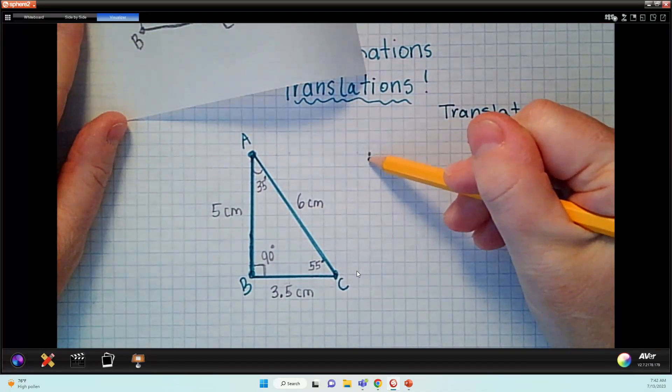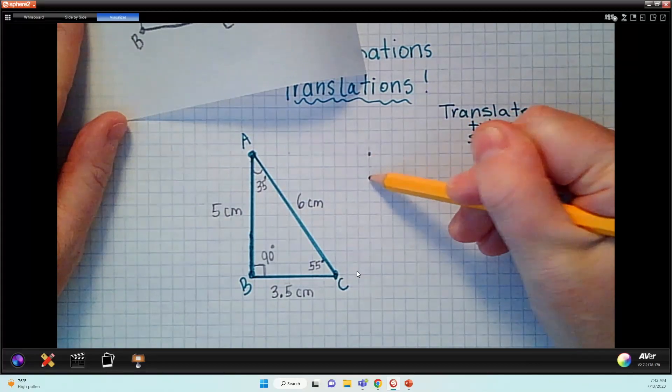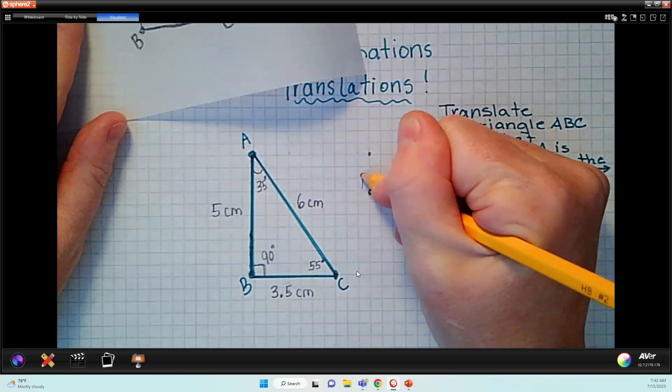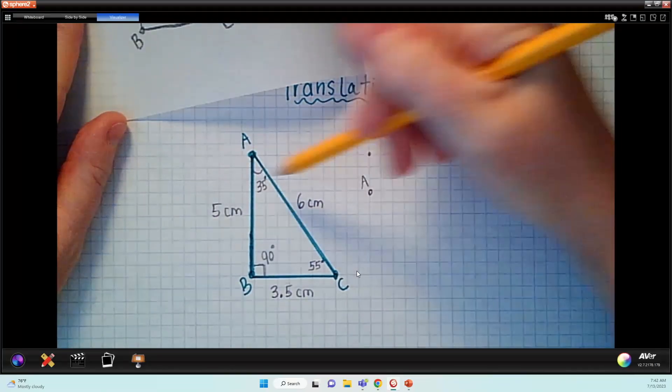So that's my 10 units to the right and then I'm going to move 3 down: 1, 2, 3. This is where A is going to be translated. Okay, that is the location.